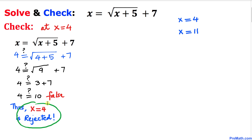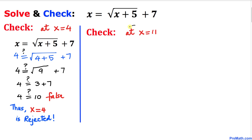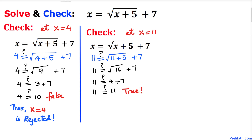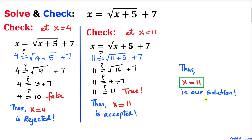Now let's check x equals 11 by substituting it into the original equation. We get 11 equals square root of (11 plus 5) plus 7, which gives us square root of 16 plus 7, that is 4 plus 7 equals 11. Since 11 equals 11, this statement is true, so x equals 11 is our valid solution and that is our final answer.